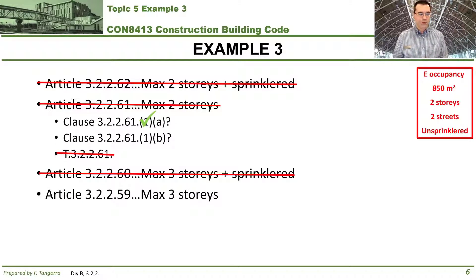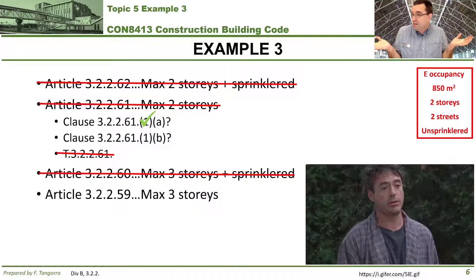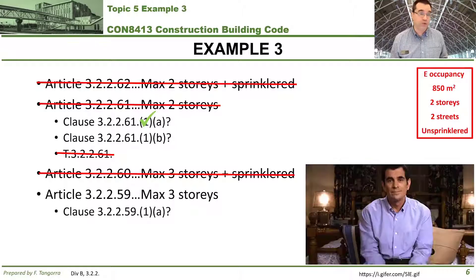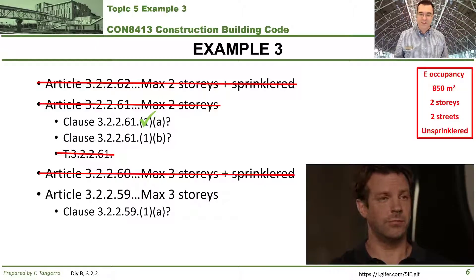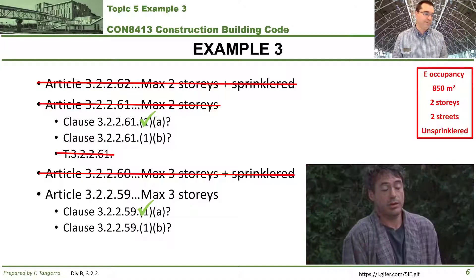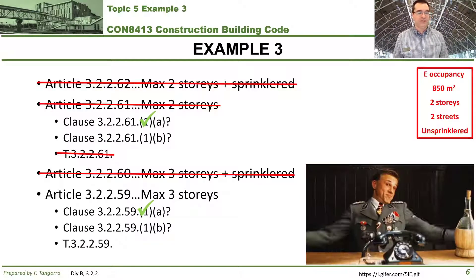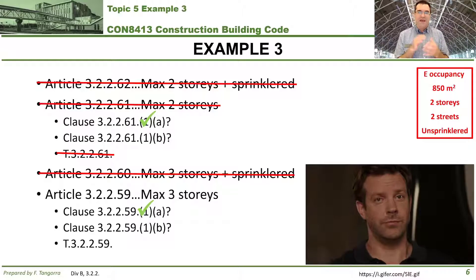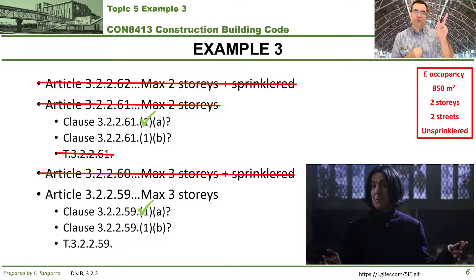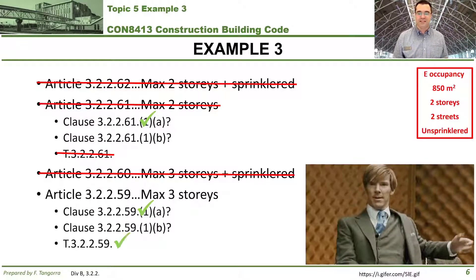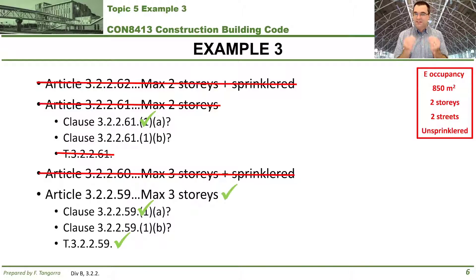The next article is 3.2.259, titled Maximum Three Stories. Could that work? Maybe. We read the whole content of this article. Clause 3.2.259.1a applies. Then we move to Clause 3.2.259.1b, which sends you to Table 3.2.259 — a table with number of stories, how many streets the building is facing, area, and so on. Does our building at two stories, facing two streets, and at 850 square meters fit within the requirements? Yes, it does. Article 3.2.259 is applicable.